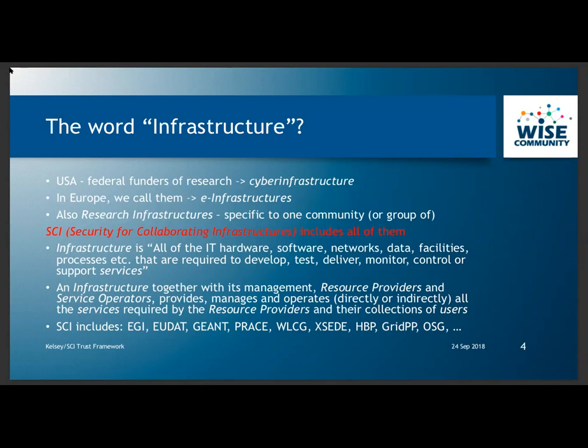The definition of 'infrastructure' in the SCI document is all the IT hardware, software, networks, data, etc., required to develop, test, deliver, monitor, control, and support services. That collection of components, together with its management, resource providers, and service operators, provides and manages all services required by resource providers and importantly the user communities. Historically, SCI has involved large infrastructures including EGI, EUDAT, GÉANT, PRACE, WLCG, the Human Brain Project, GridPP, Open Science Grid, and others.